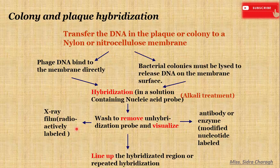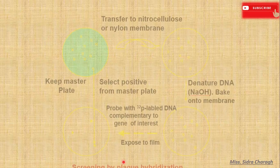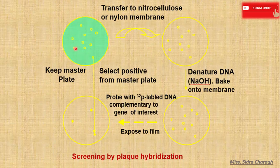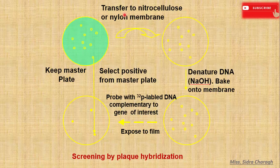For visualization, we use film that is radioactively labeled, and in the case of colonies, we use antibody or enzyme, then line up the hybridized region or perform repeated hybridization. Here is our master plate that contains the clones having our desired gene of interest. We transfer colonies from that master plate to the nitrocellulose membrane by replica plating. Then we denature DNA and bake the membrane so our DNA is bound tightly to the membrane surface.